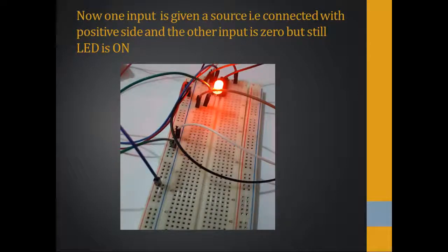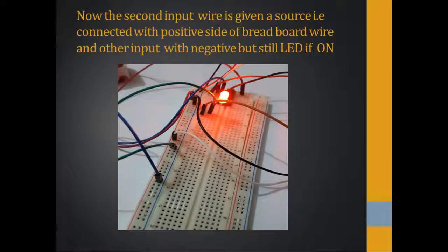Now one input is given a source connected with the positive side and the other input remains zero, but still the LED is on. This proves the second condition of the truth table — when one input is zero and the other is one, the output is one.